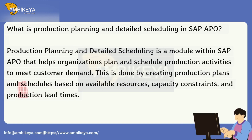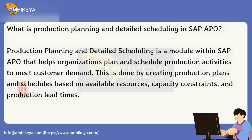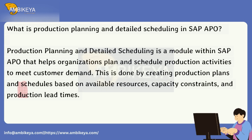What is Production Planning and Detailed Scheduling in SAP APO? Production Planning and Detailed Scheduling is a module within SAP APO that helps organizations plan and schedule production activities to meet customer demand. This is done by creating production plans and schedules based on available resources, capacity constraints, and production lead times.